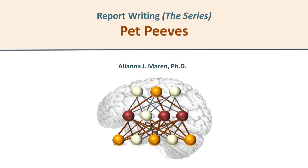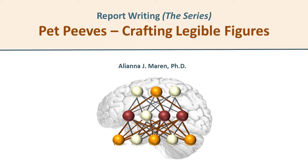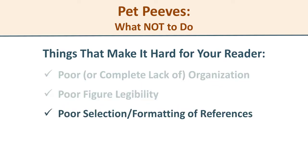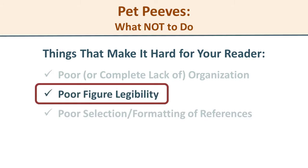Are you trying to write a research paper with maximal impact? There are three pet peeves you need to successfully avoid in order to make your paper much more attractive and effective. In this video we'll go over the second one, which has to do with making legible figures. In order, the three topics are: report organization, legible figures, and effective use of your references. Let's focus in on that second topic: creating effective and legible figures.